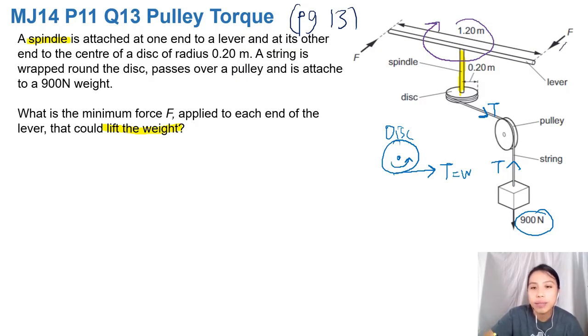Because, I repeat again, the disc at the bottom wants to rotate anti-clockwise. Draw the things nicely. But you have to counter that with the thing on top. Okay, minimum force so you can start lifting the weight. So let's do this.